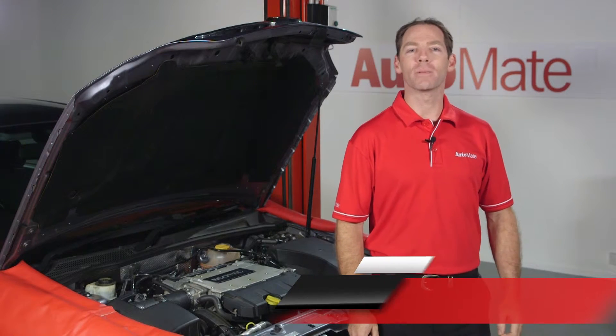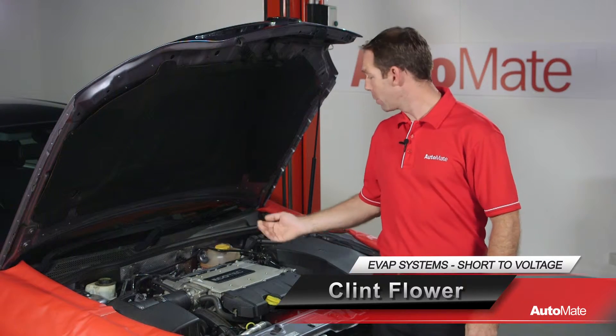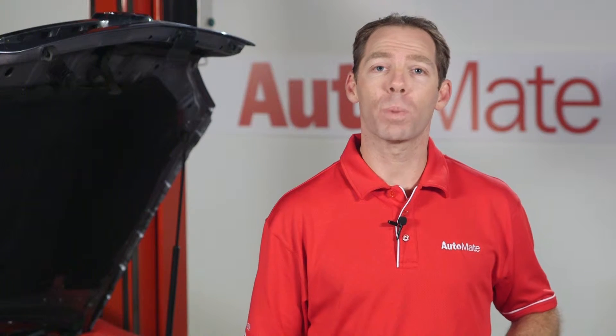Hi, welcome to Automate. I'm Clint. The evaporative emission, or EVAP purge solenoid valve, is used to purge fuel vapor from the EVAP canister to the intake manifold. This is an essential part of the modern vehicle's emission control system.